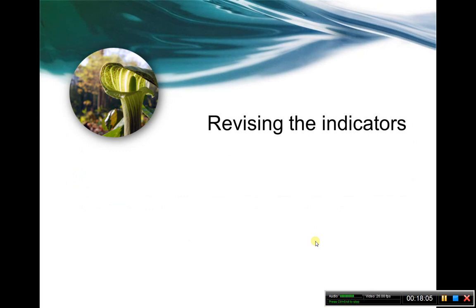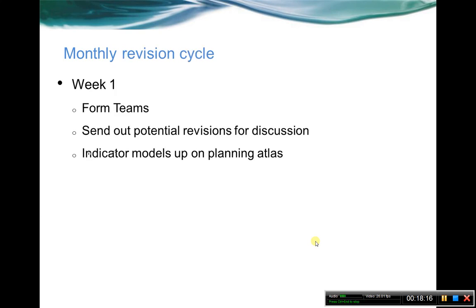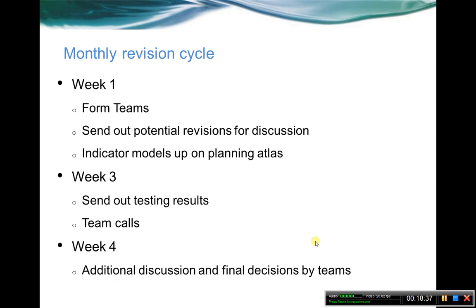Now, on to revising the indicators and the overall process. Here's a reminder of the monthly schedule. Every month we're doing one to two ecosystems — you would know that because you're on the beaches and dunes revision team. Basically at the beginning of the month, starting with the newsletter, we form teams, send out potential revisions for discussion, and get the indicator models up on the planning atlas. Then around weeks three and four, we get out some of the testing results, hold team calls, have additional discussion, and make final decisions by the team at the end of the month. There is a two-week comment period that starts at the end of the month, giving anyone an opportunity to comment on the team's recommendations. After those two weeks, we get final steering committee approval, and those are locked in for Blueprint 2.0.